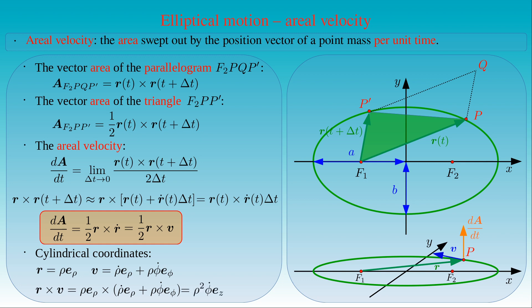Since the aerial velocity of the body has only a z-component, it is perpendicular to the plane of the motion, as expected. Let us replace the coordinate rho with R, and the azimuthal angle phi with theta, which are the more popular notations of these coordinates in this context.